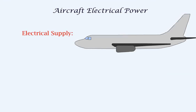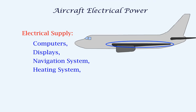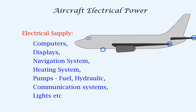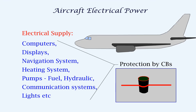From the AC and DC buses, electrical supply is given to computers, displays in the cockpit, navigation system, heating systems, pumps, communication system, and lights. Protection for these systems is provided by circuit breakers or CBs, which disconnect the system if it detects an excess current and can be reset later if required.